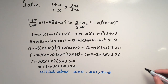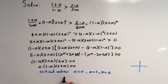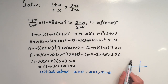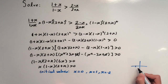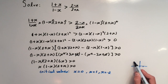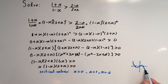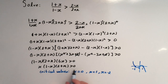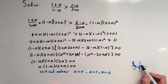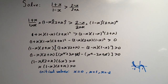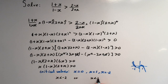This cubic has a negative coefficient of x³, so it starts in the top-left quadrant and ends in the bottom-right quadrant. The roots are at x = -2, x = 0, and x = 1. Sketching the graph, we can see the inequality is greater than zero between -2 and 0, and again above 1. So the solution is x < -2, or 0 < x < 1.